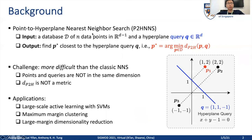We first formalize this problem. Given a database of N data points and a hyperplane query Q, the Point to Hyperplane Nearest Neighbor Search aims to find the data point P star which is closest to the hyperplane query Q. For example, consider the figure on the right. There are three data points P1, P2, and P3 on a 2D plane, and there exists a blue line which can be considered as a hyperplane query. As you can see, the data point P1 is closest to the hyperplane query Q, so P1 is the data point P star we aim to find.